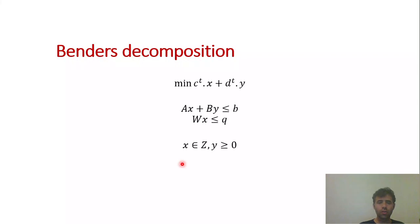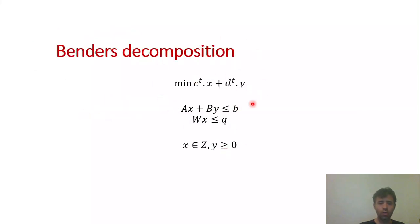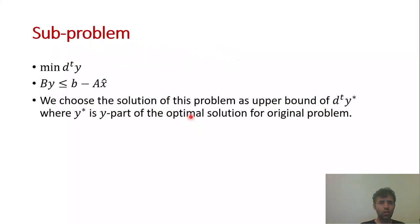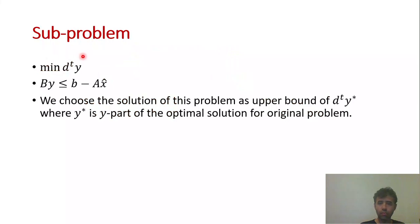In the following slides I'm going to introduce what the sub problem and master problem are. To form the sub problem from the original mixed integer linear programming problem, we simply drop the x part of the objective function and keep only the y part — the real variables part — as the objective function of the sub problem.